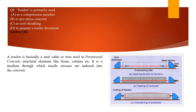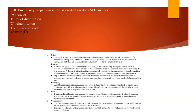The next question: a tendon is primarily used for — this question was also asked in 2019 as a multiple choice question. I have a video on pre-stressed concrete which I'll link in the description below. A tendon is basically a steel cable or wire used in pre-stressed concrete elements like beams and columns. It is the medium through which tensile stresses are introduced into the concrete. Pre-stressed concrete is done in two ways: pre-tensioning and post-tensioning.